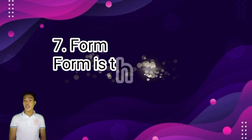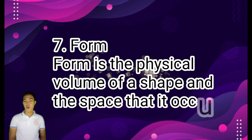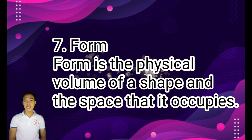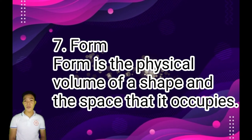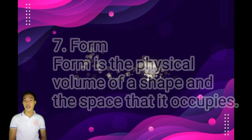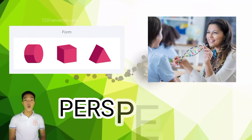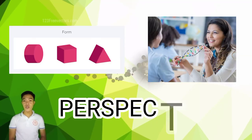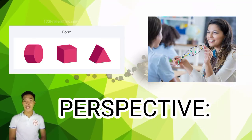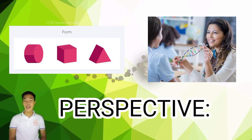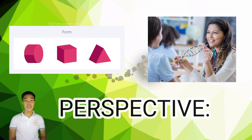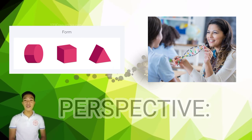And for our last element is form. Form is the physical volume of a shape and the space that it occupies. Knowing how to use forms effectively in designing visuals will determine how well we can convey a message or information to our learners.